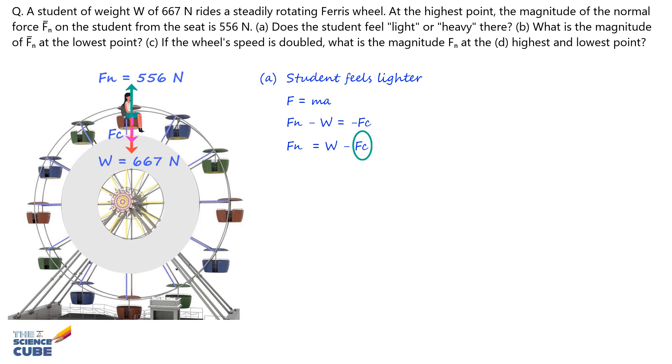In part B, at the lowest point, the forces are set up a little differently. Using the same sign notation, we get Fn minus W equals Fc.